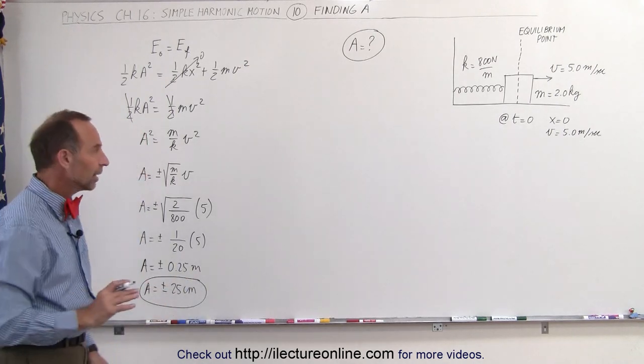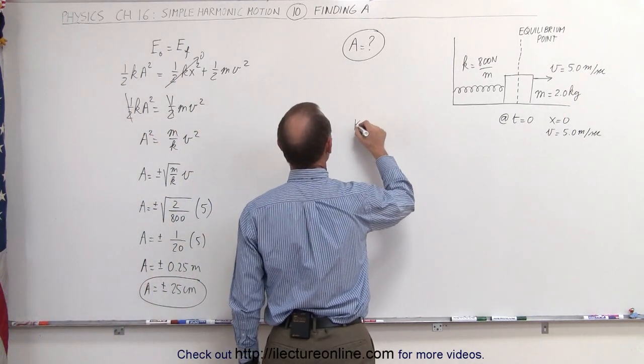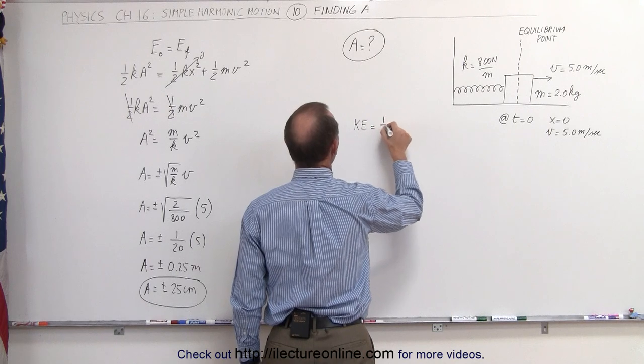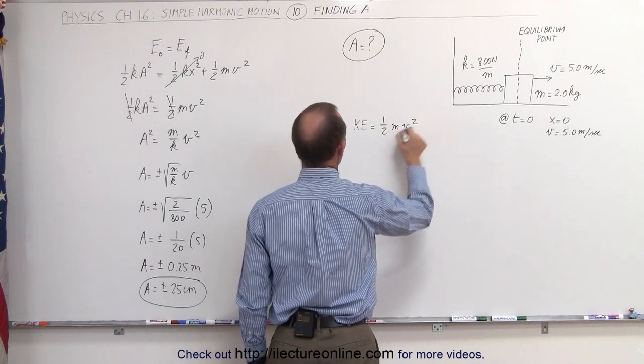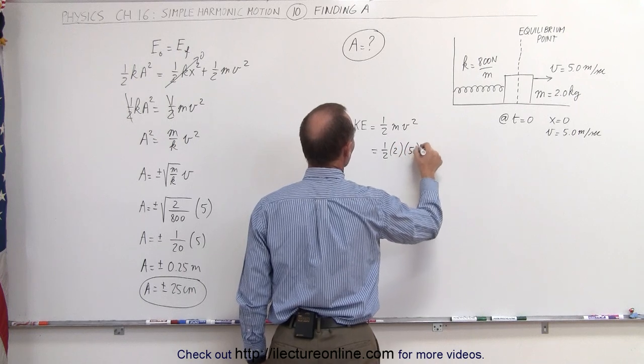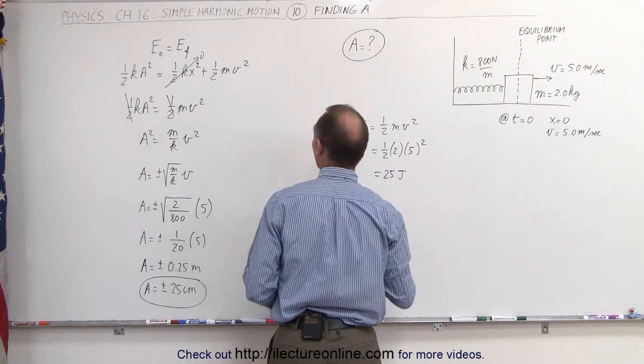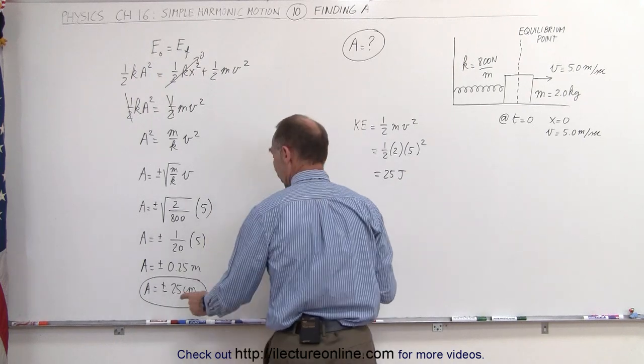Now let's check this to see if that makes sense. The kinetic energy would be equal to 1 half mv squared, which is equal to 1 half times the mass, times 5 squared. That would be equal to 25 joules. The potential energy stored in the spring with an amplitude of 0.25 meters.